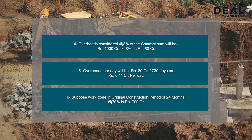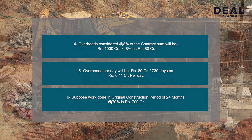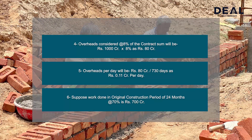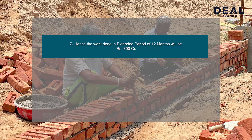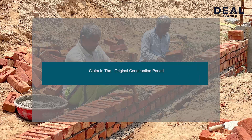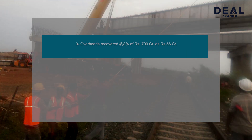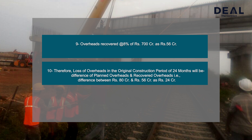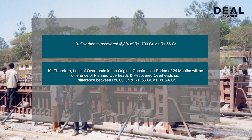Suppose work done in the original construction period of 24 months is at the rate of 70%, i.e. Rs. 700 crores. Hence the work done in the extended period of 12 months will be Rs. 300 crores, and the claim in the original construction period is Rs. 500 crores. Therefore, loss of overheads in the original construction period of 24 months will be the difference of planned overheads and recovered overheads, i.e. Rs. 80 crores minus Rs. 56 crores = Rs. 24 crores.